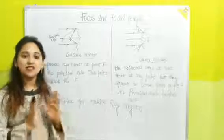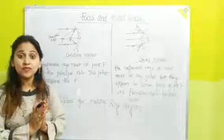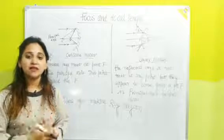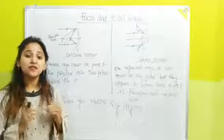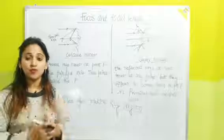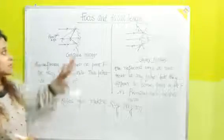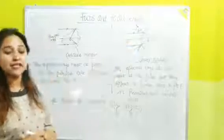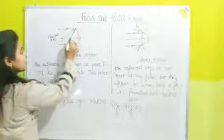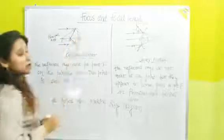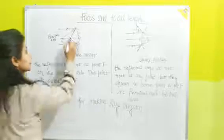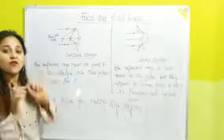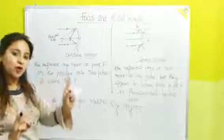So these are three important rules for making ray diagrams for spherical mirrors. Whenever you are making a ray diagram, keep these three important rules in mind. Next topic is focal length. Focal length is the distance between the focus and the pole — the distance between the pole and focus is known as focal length.